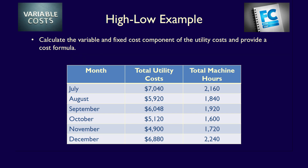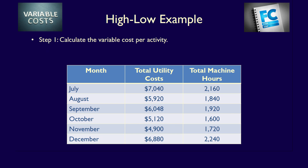Calculate the variable and fixed cost components of the utility costs and provide the cost function. It's best to use a step-by-step approach. Step 1: the high-low method uses the total costs incurred at the high and low levels of activity. The difference in costs between the high and low levels represents the variable cost components, because only variable costs change with the level of activity. First, determine the high and low levels of activity using the cost driver — the activity that causes the cost to change — and once found, take the related costs.